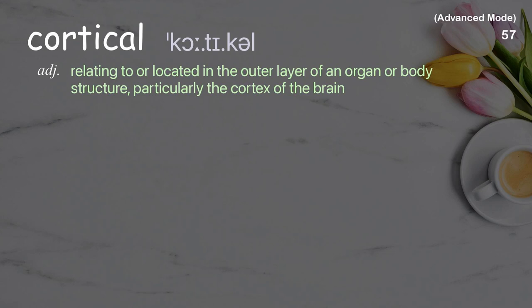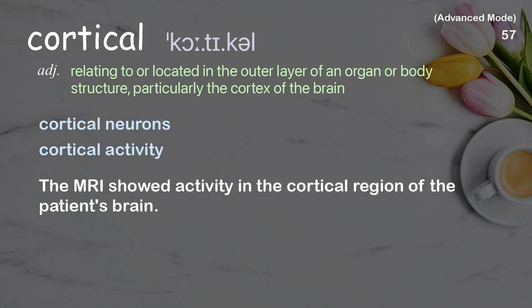Cortical: relating to or located in the outer layer of an organ or body structure, particularly the cortex of the brain. Examples: cortical neurons, cortical activity. The MRI showed activity in the cortical region of the patient's brain.